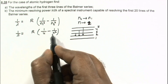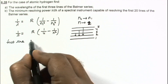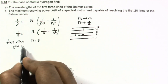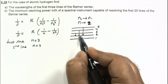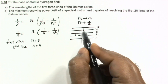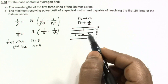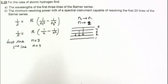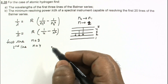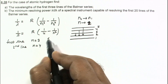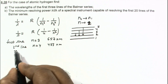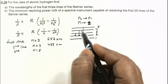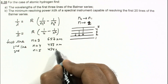After substituting values, for the first line n = 3, the wavelength is about 657 nm. For the second line n = 4, it is 487 nm. For the third line n = 5, the energy is maximum and wavelength is minimum, giving approximately 434 nm. The wavelength is maximum for the first transition and minimum for the third.